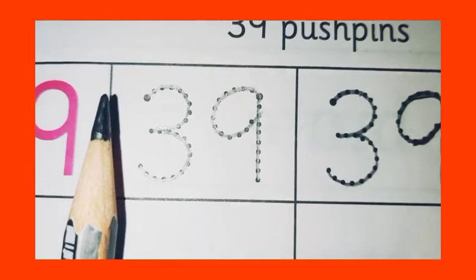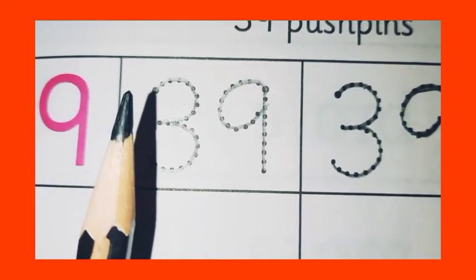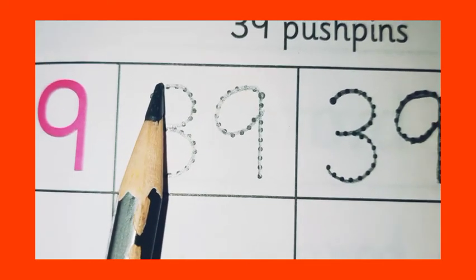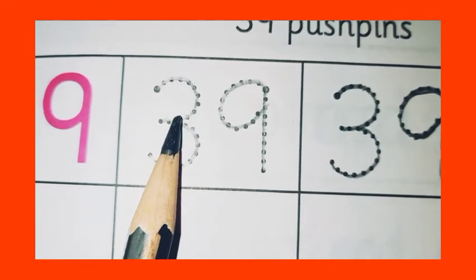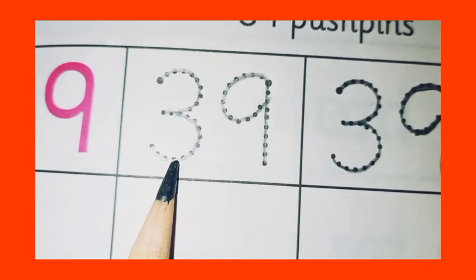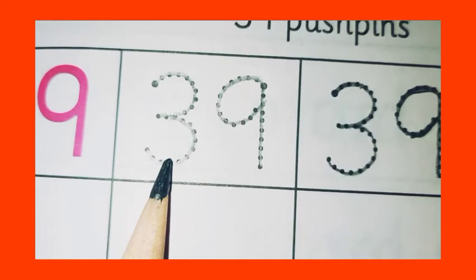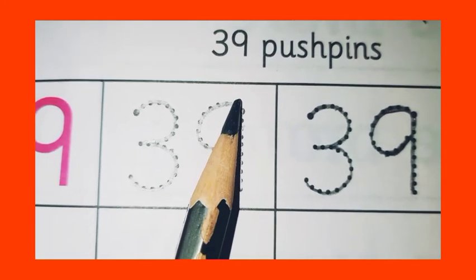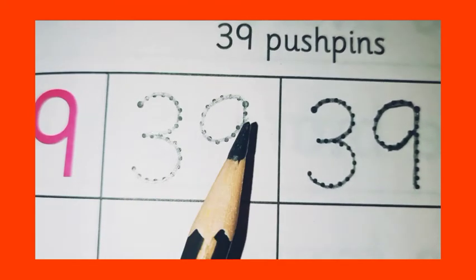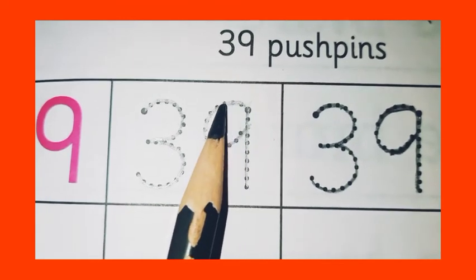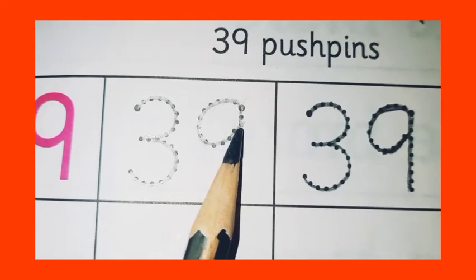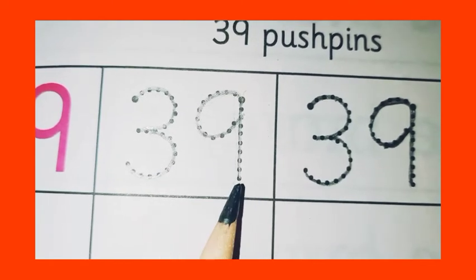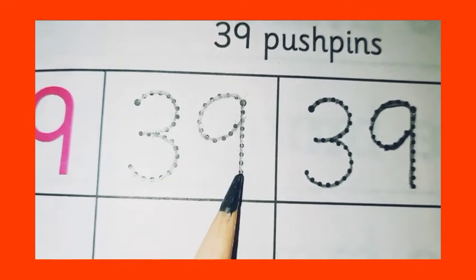First of all, we draw a small curve. Join another small curve. This makes three. Up, we draw a standing line. Then, we draw a small curve. This makes nine. So three and nine together makes 39. Three, nine, 39.